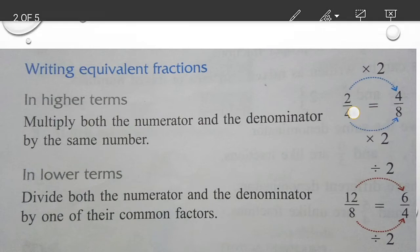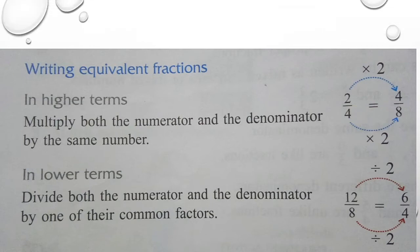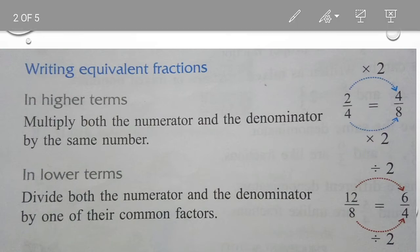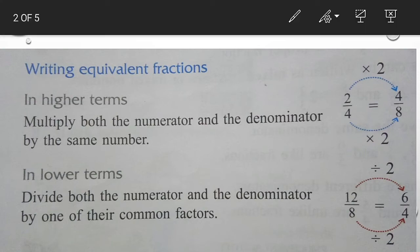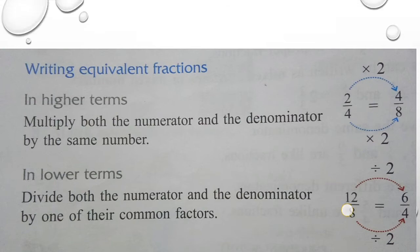If I do this fraction in lower term convert, then divide both the numerator and denominator by one of their common factors. Common factor means which table both the numerator and denominator are in.